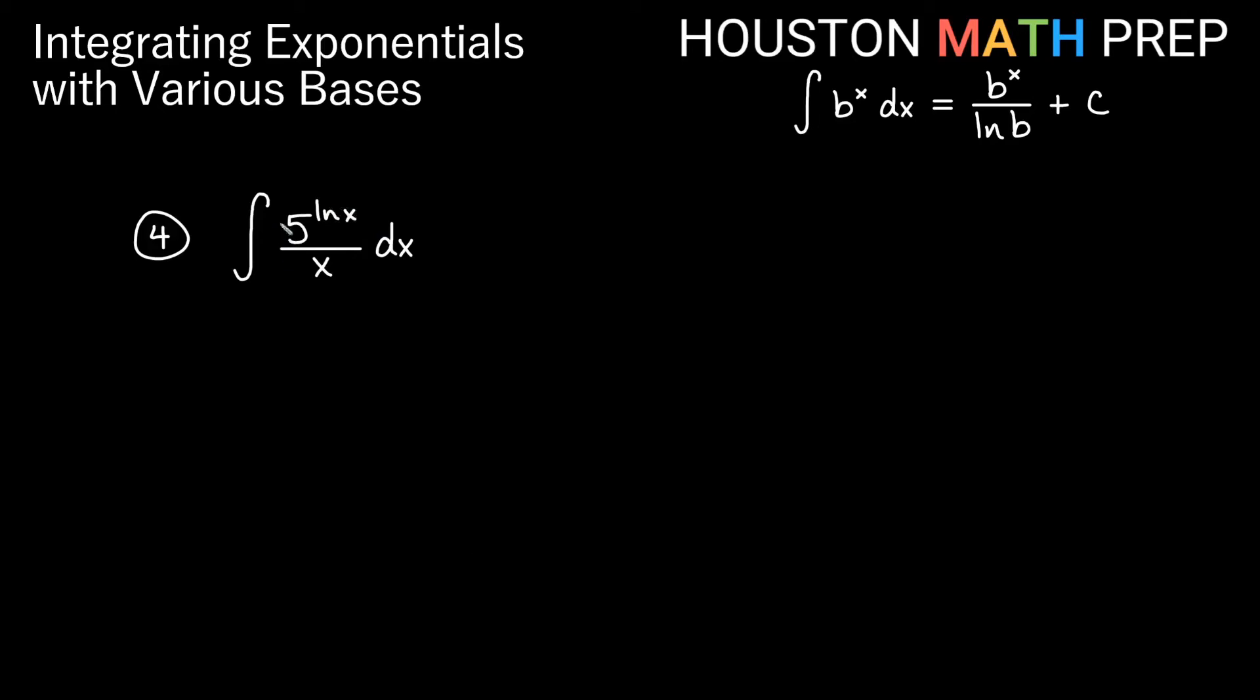Our last one here, we have the integral of 5 to the ln x over x dx, so notice ln x is inside of our exponential. It's our exponent. Since we don't have a chain rule for integrals when I have an exponent, a good guess for u substitution is to let u equal the stuff in the exponent. So let's try that. u is equal to ln of x, the derivative of ln x, so du would be 1 over x dx.